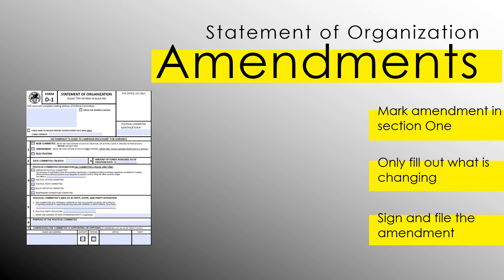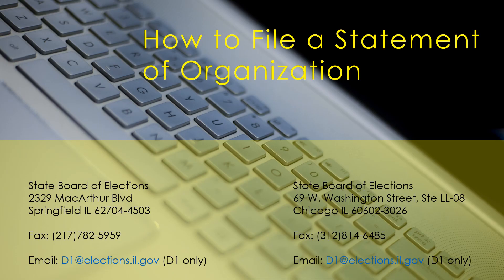Please remember, it's very important to keep your committee's information on file with the State Board of Elections up to date. The information provided on your D-1 is what we will use to contact you about problems with a report, reporting deadline reminders, penalties, appeal information, and important changes to the law. If your D-1 information is not current, you may miss a critical mailing. The Statement of Organization may be filed either by hand-delivering or mailing it to either the Springfield or Chicago offices, by fax, or by email at d1@elections.il.gov.